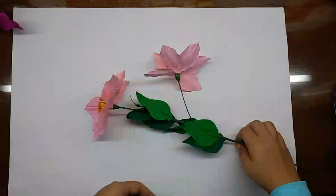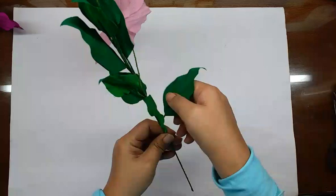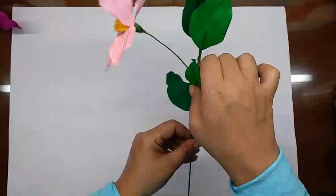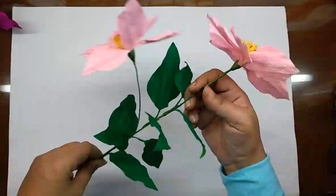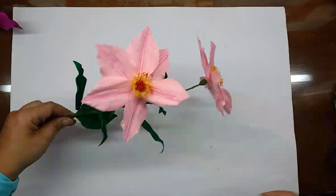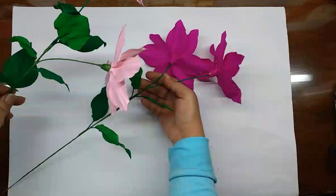Now just open out the leaves, and this is how the flower would look. This comes in variety of colors. I've made another one in hot pink, purplish pink, like this.